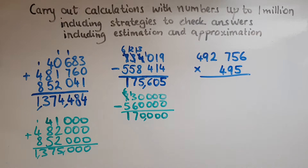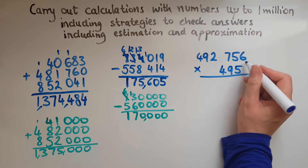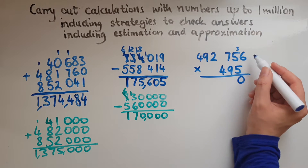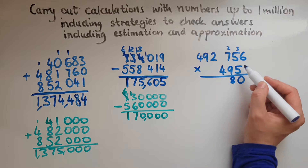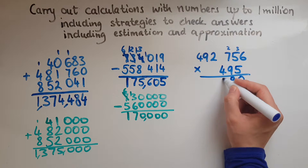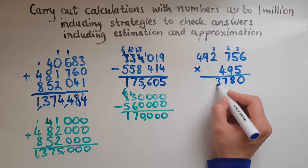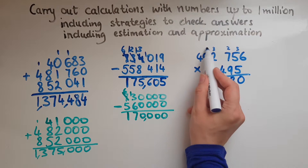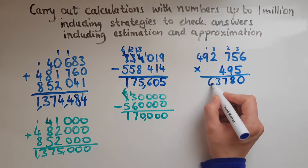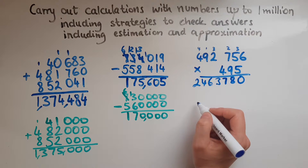Now we'll look at multiplication. The same procedures will follow as if we had fewer digits. We will start with the units. 5 times 6 is 30 — so 0 down and 3 carried over. 5 times 5 is 25, and the 3 is 28 — so 8 down and 2 carried over. 5 times 7 is 35 and the 2 is 37. 5 times 2 is 10 and the 3 is 13. 5 times 9 is 45, and with the 1 carried over, 46. 5 times 4 is 20 and the 4 is 24. So we're finished with the 5.